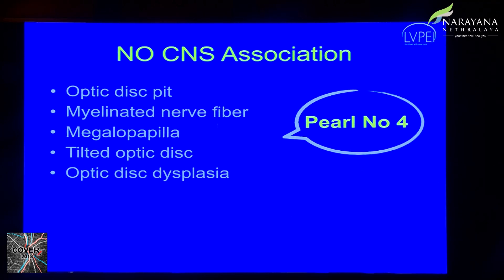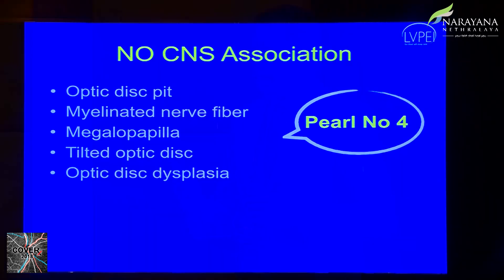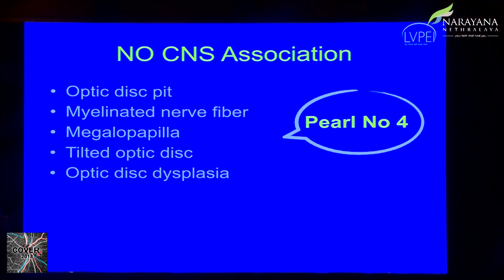Many fellows and residents ask whether to do an MRI. For optic disc pit, myelinated nerve fiber layer, megalopapillae, tilted optic disc, and optic dysplasia, neuroimaging is generally not required. One exception: optic disc pit can be associated with a cyst in the orbit, so a CT scan of the orbit may be needed in that case.